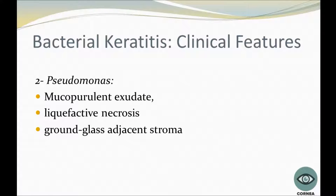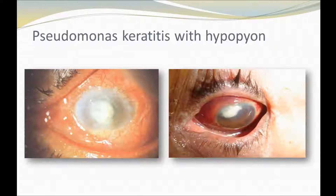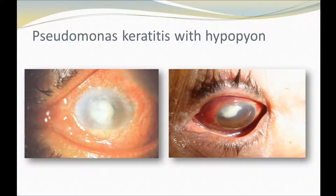About Pseudomonas, there can be mucopurulent secretion, which is called hypopion, as well as liquefactive necrosis and ground-glass appearance of the adjacent stroma. The pictures show Pseudomonas keratitis with hypopion.